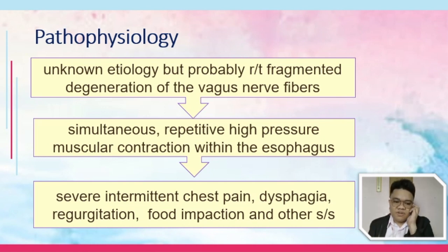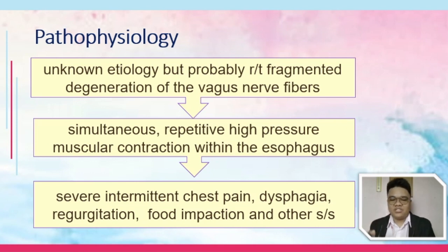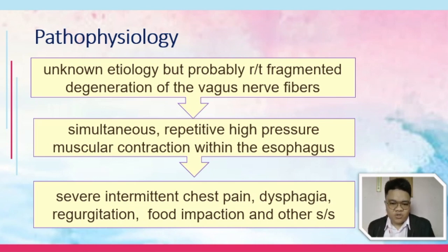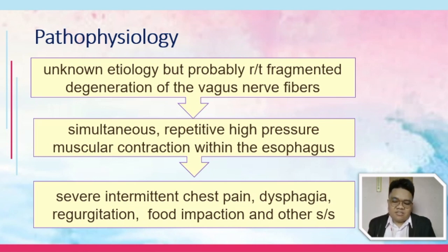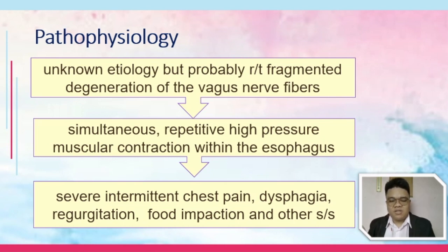The esophagus is expected to have peristalsis, but this peristalsis is necessary movement. The problem in diffuse esophageal spasm is that there are simultaneous, repetitive, high-pressure contractions which are not needed by the esophagus — an exaggerated contraction. This results in severe intermittent chest pain, dysphagia, regurgitation, and food impaction. Food gets impacted inside the esophagus because it cannot move down due to this unnecessary movement.